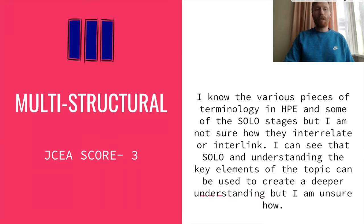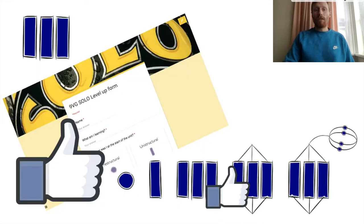If you're at a multi-structural stage, or a JCA score of three: I know the various pieces of terminology in health and PE and some of the SOLO stages, but I'm not sure how they interrelate or interlink. I can see that SOLO and understanding the key elements of a topic can be used to create a deeper understanding, but I'm unsure how. At this stage, you know most of the SOLO stages but can't link them together, you don't know how to reach the next level, and you might know a couple of key phrases in the topic you're studying.